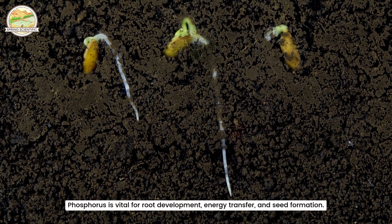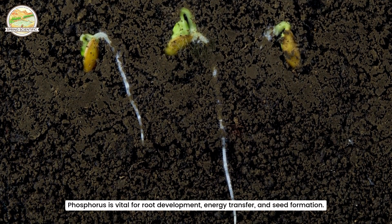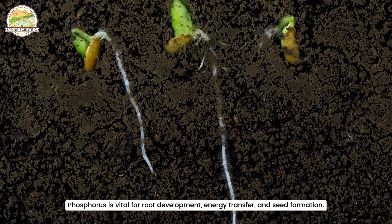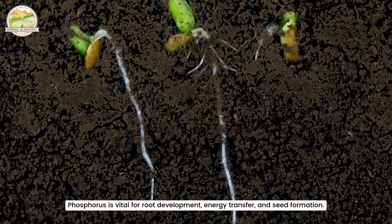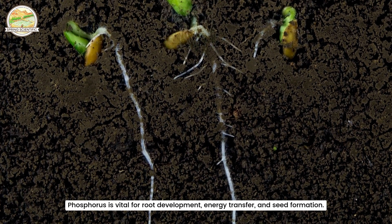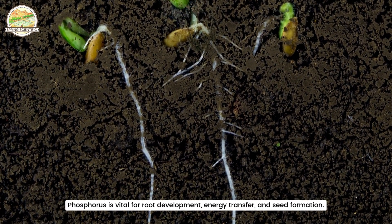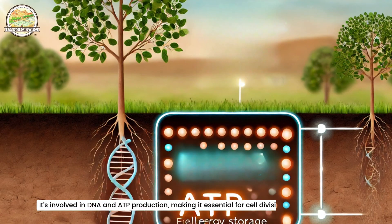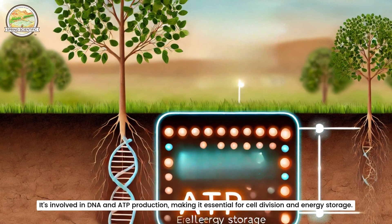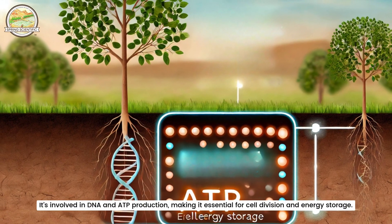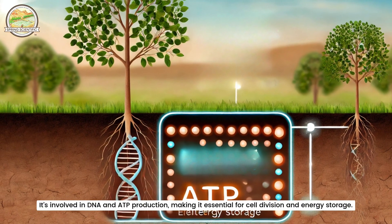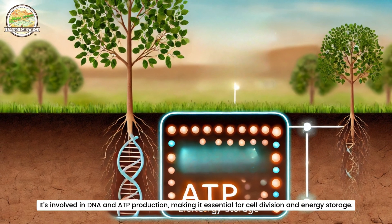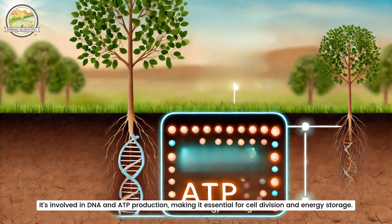Phosphorus (P) is vital for root development, energy transfer, and seed formation. It's involved in DNA and ATP production, making it essential for cell division and energy storage.